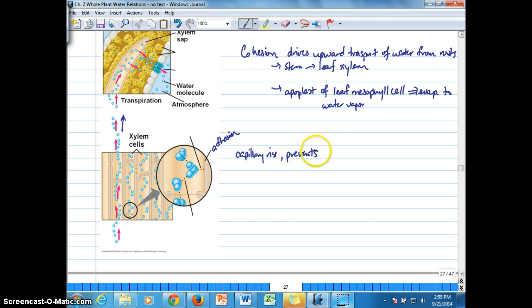But also, this is another aspect of that, another advantage of this kind of bonding, prevents the water column from slipping back down through the xylem towards the roots.